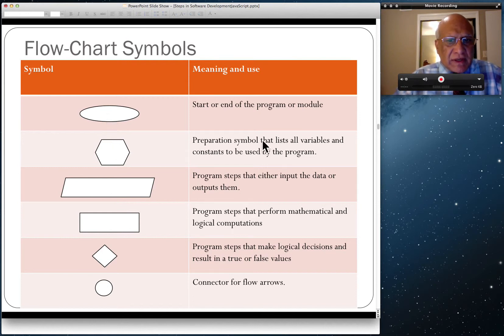A hexagon is called a preparation symbol that should list all the variables and constants used in programs. Variables store data whose value can change; constants store data whose value cannot change.